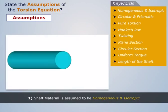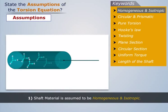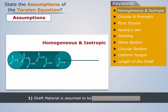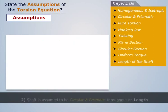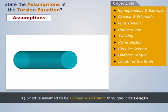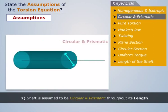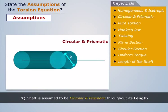Number 1: Shaft material is assumed to be homogeneous and isotropic. Number 2: Shaft is assumed to be circular and prismatic throughout its length.